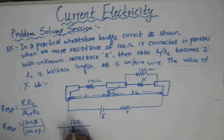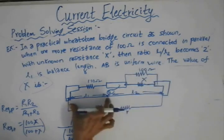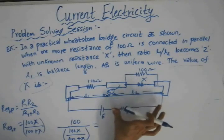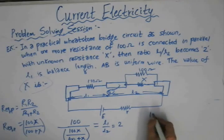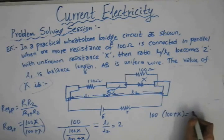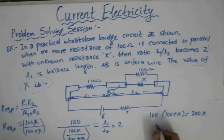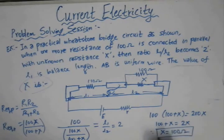The resistance in the right gap equals the ratio of balancing lengths. With L1/L2 = 2, we solve for X and obtain X = 100Ω. So the value of the unknown resistance for this circuit is 100Ω.